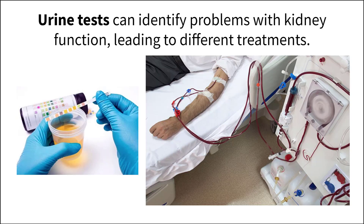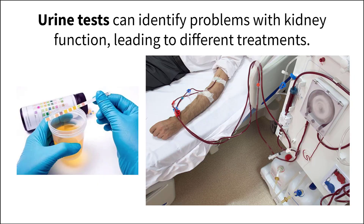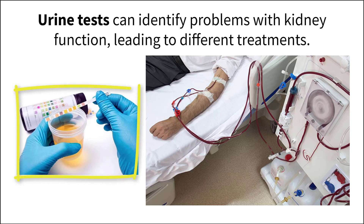Problems with kidneys can be revealed through urinary tests that detect certain chemicals found within urine. These tests, which can be completed with urine test strips, can identify levels of protein and glucose in the urine as well as indicate the pH. High levels of glucose and proteins in the urine can be an indicator for diabetes and other signs of kidney damage.